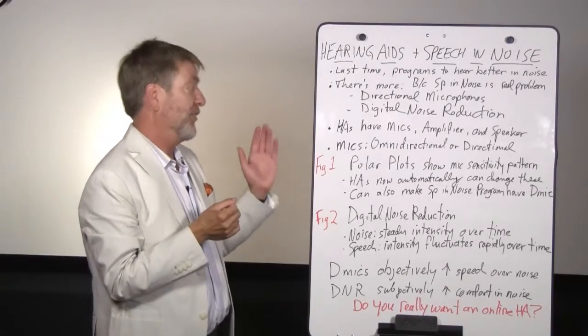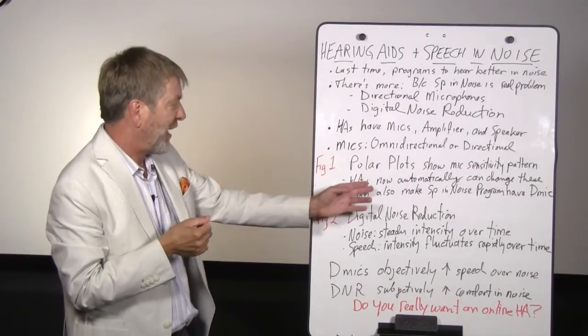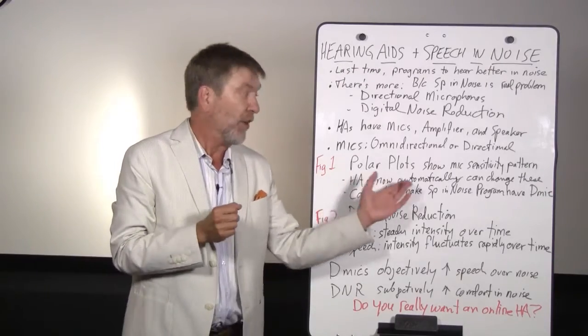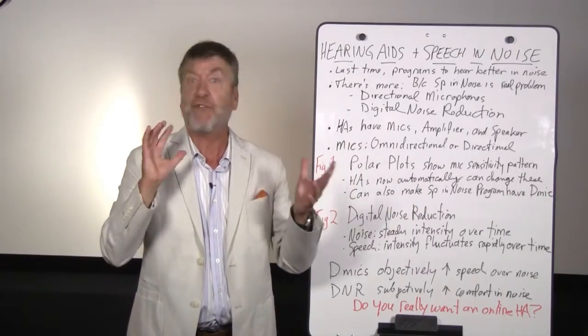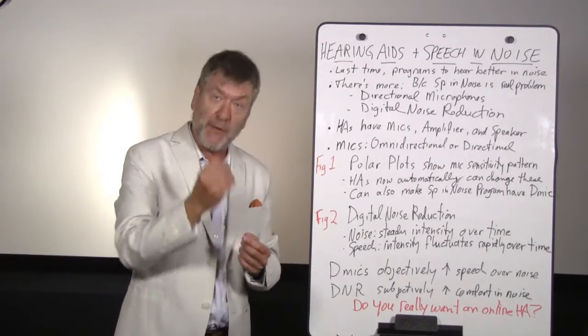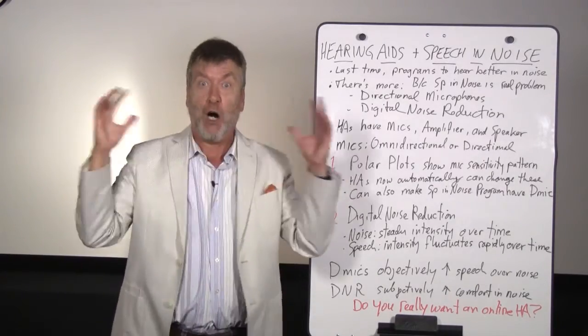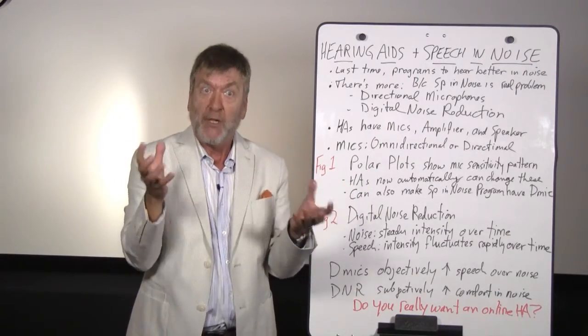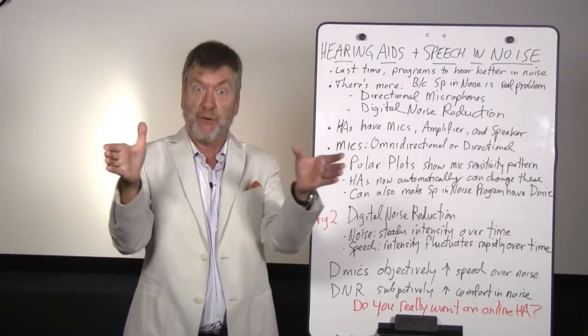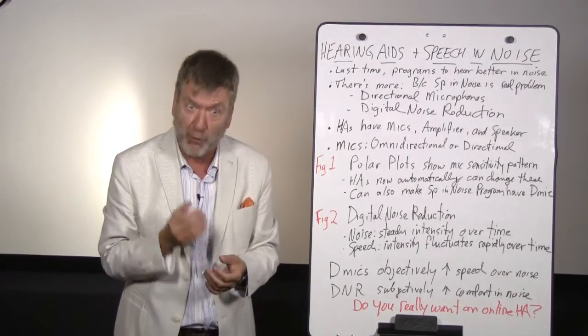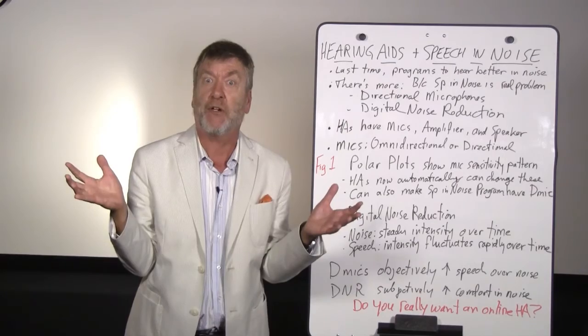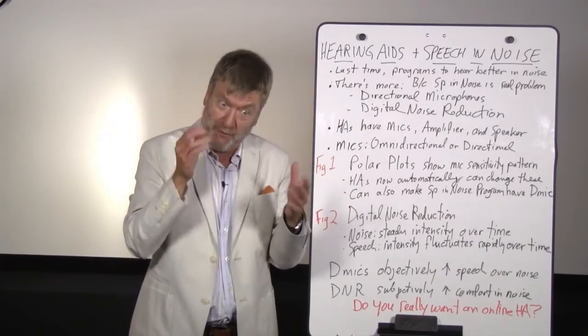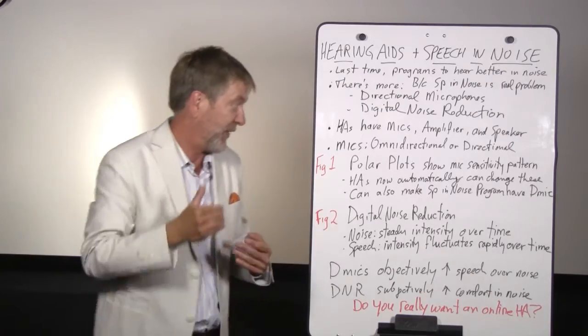That's polar plots and directional microphones. The nice thing also about today's hearing aids, because they're digital, the hearing aid can automatically switch among these different sensitivity patterns. The hearing aid can sometimes be operating with an omnidirectional microphone, and then when noise comes into the picture, the hearing aid will suddenly make its microphone revert to directional. And you, the listener wearing the hearing aid, you don't have to make any adjustments at all, the hearing aid's doing it automatically. So it's amazing what today's hearing aids are doing that way.